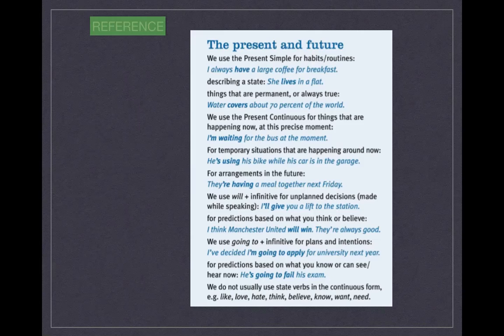We use the present continuous for things that are happening now at this precise moment: 'I'm waiting for the bus at the moment.' For temporary situations happening around now: 'He's using his bike while his car is in the garage.' For arrangements in the future: 'They're having a meal together next Friday.'